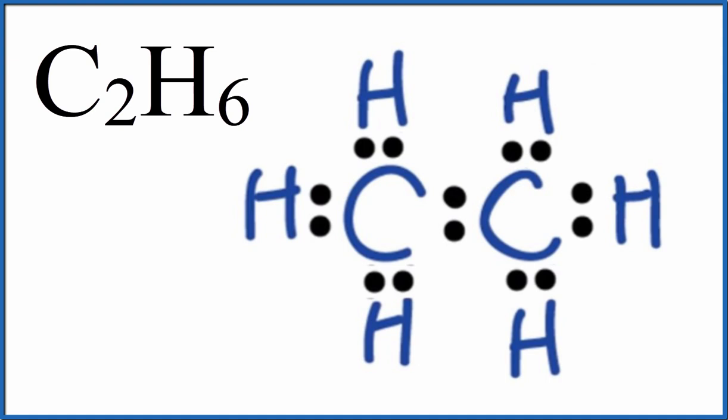We can also look at the shape of the molecule to see if there might be some unequal distribution of charge. For C2H6, those hydrogen atoms, they're going to spread out around the carbon and as far away from each other as they possibly can, and that'll give us the shape.